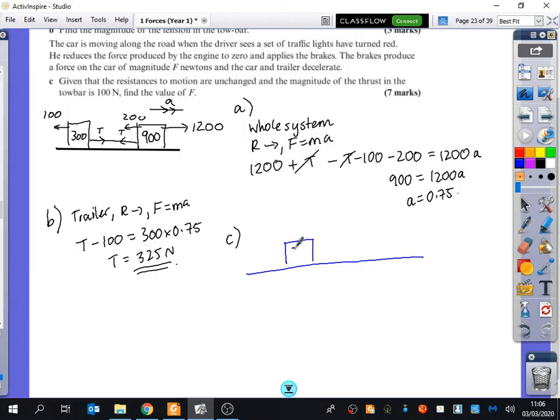I've got the trailer, which is 300. I've got the car, which is 900. There is no driving force to the right anymore. I know about the tow bar. They've said that the thrust in the tow bar is 100. So what should these arrows be looking like, outwards or inwards? They should be going outwards for thrust because it's like pushing into it. So we're going to have an inwards arrow going into the trailer and into the car. Both of those are 100.